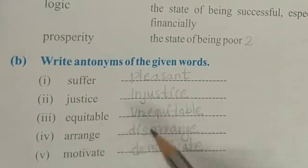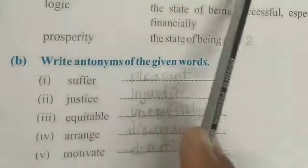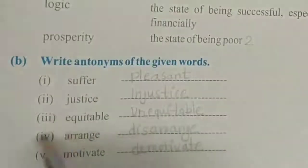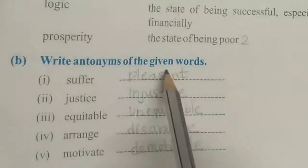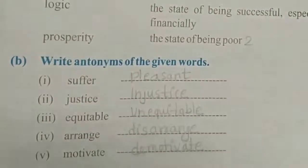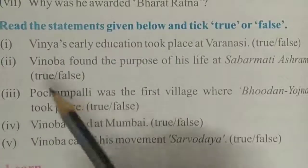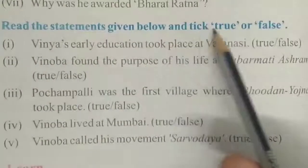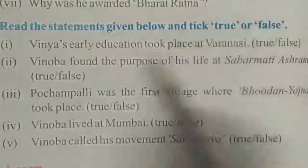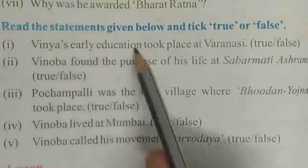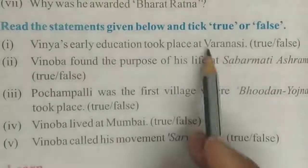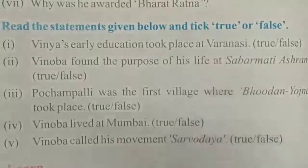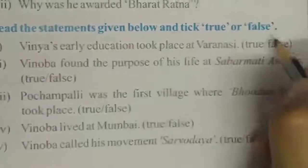So students, here we complete our 'Match the Following Words with Their Meaning,' Word Power, and 'Write Antonyms of the Given Words.' Next is True-False. Read the statement given below and tick true or false. First: Vinoba's early education took place at Varanasi. Kya uski early education Varanasi mein hui thi? False.